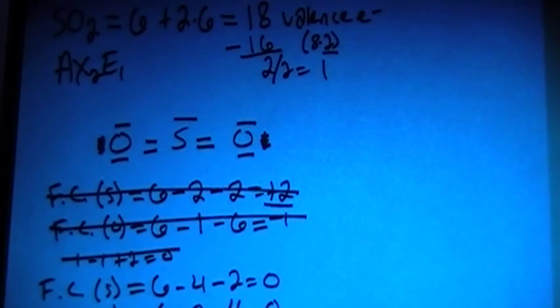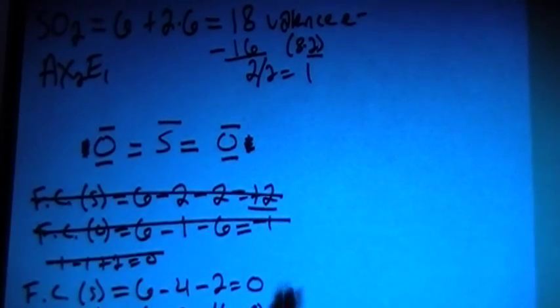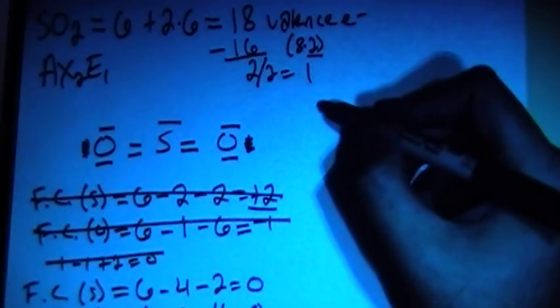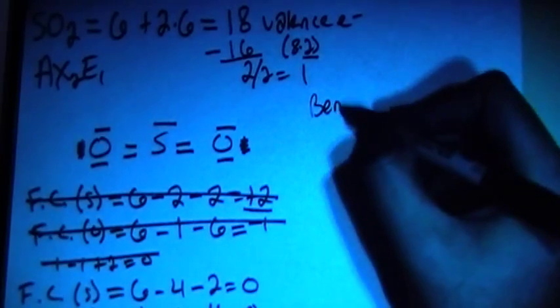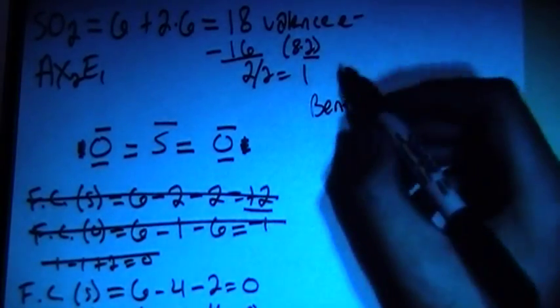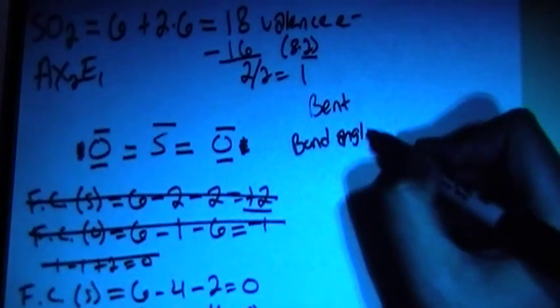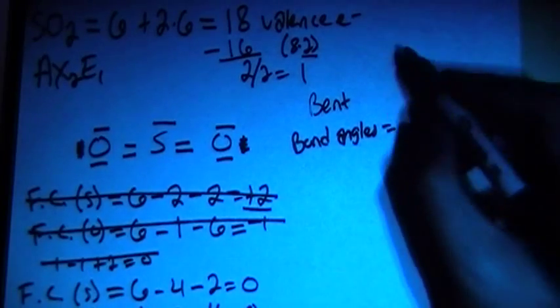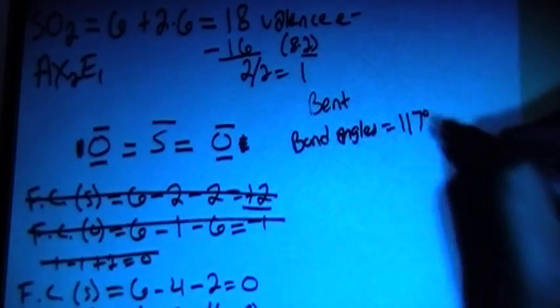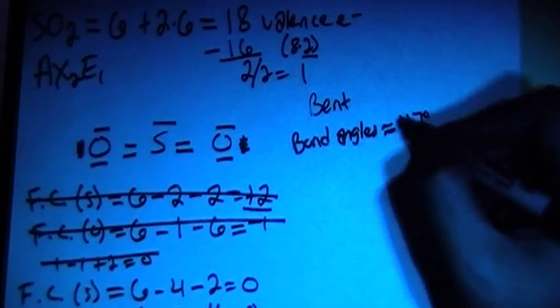So, now we can discuss shape real quick. Because it's AX2E1, it's going to end up being a bent shape. All right? And that means that the bond angles are going to be equal to 117 degrees, approximately.